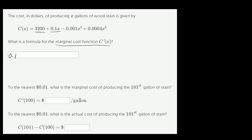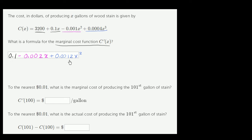The derivative of −0.001x² is going to be −0.002x. And then finally, the derivative of 0.0004x³ — three times four ten-thousandths is twelve ten-thousandths — so +0.0012x². That right there is equal to the marginal cost function.